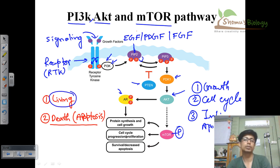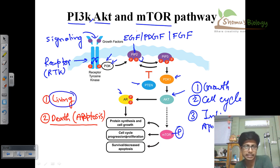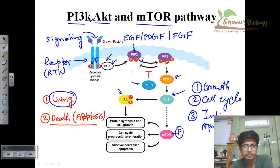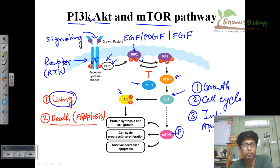These three outcomes are possible due to the interaction of PI3K, AKT, and mTOR all together. It is a survival mechanism of the cell — PI3K, AKT, and mTOR work together to get the cell to grow and divide. If you like the video, please hit the like button, subscribe to the channel for more videos, and share this video with your friends. Thank you.